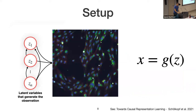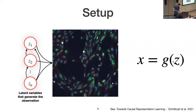As setup: throughout this talk we'll be looking at systems where there's a set of latent variables Z that describe the underlying state of our system, and we observe X — an image rendered by some generative function g that maps from latents to observations. The question we're interested in: can we recover the latent variables Z from X?